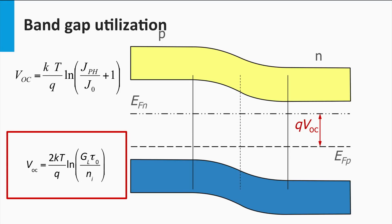The equation tells us two important aspects of the open-circuit voltage. If we increase the irradiance, or in other words the generation rate of charge carriers, the open-circuit voltage is increased. This is a welcome effect utilized in concentrator photovoltaics, which we will discuss later in this course. Secondly, we see that the lifetime plays an important role — the larger the lifetime of the minority charge carrier, the larger the open-circuit voltage can be.